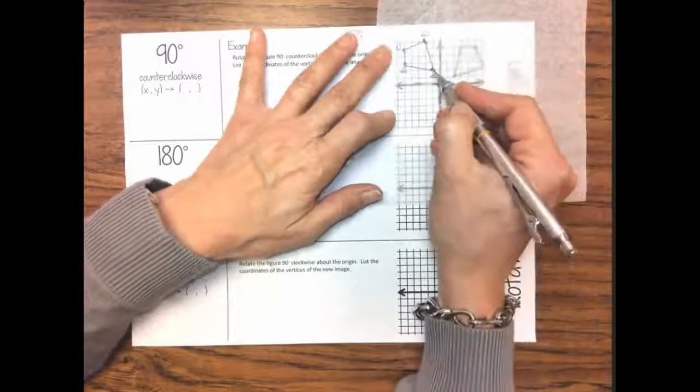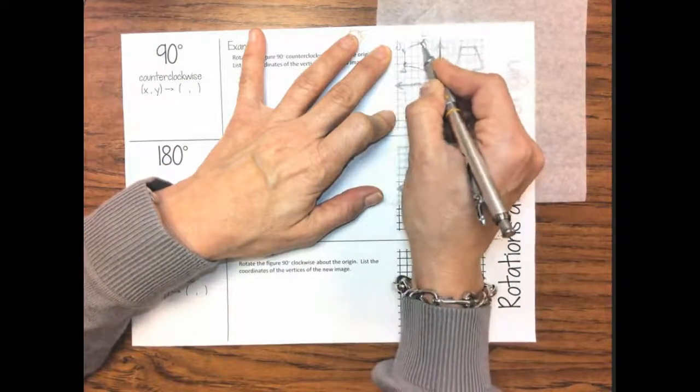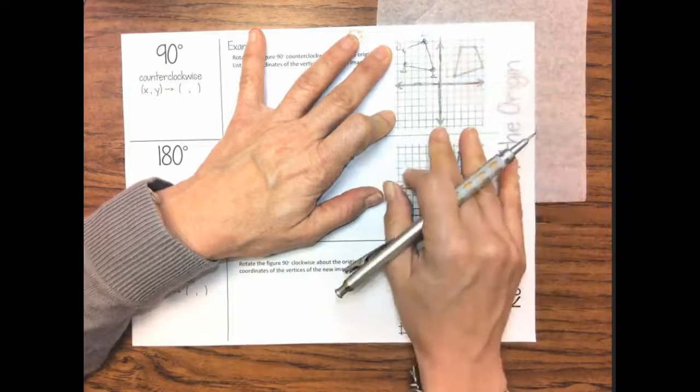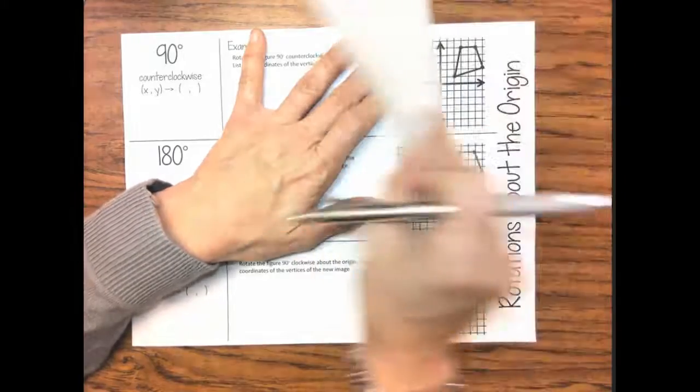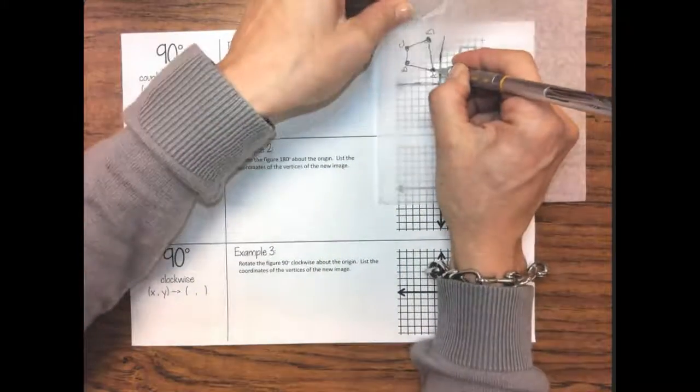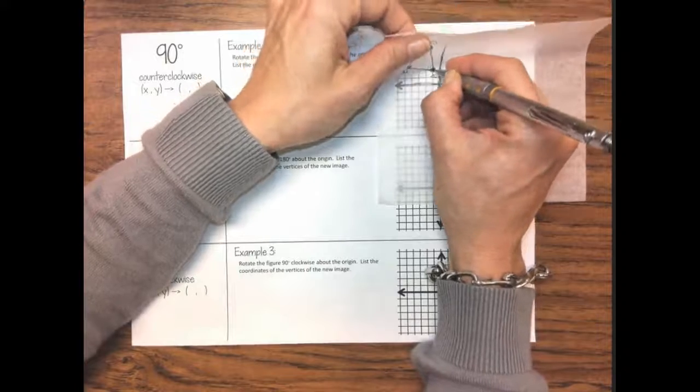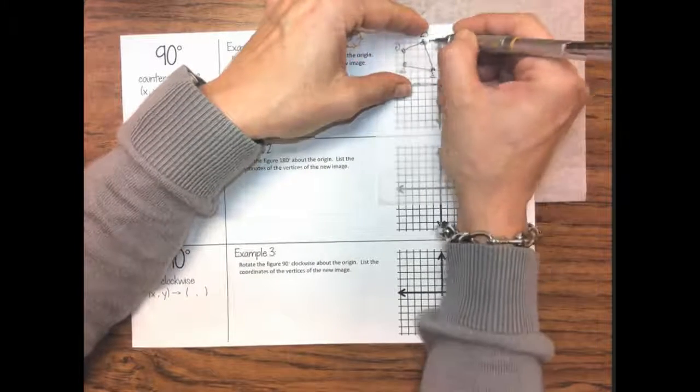So this is going to be our image right here. It's going to look something like this. So we're going to make sure these ordered pairs are where they go. And I cheat a little bit. That's why I really use mechanical pencils.